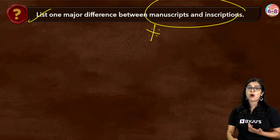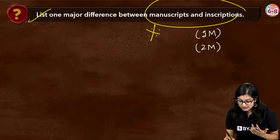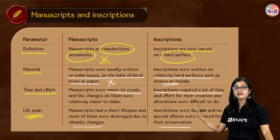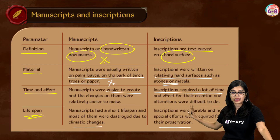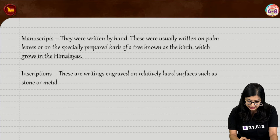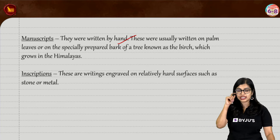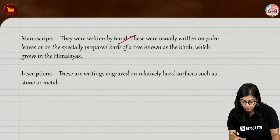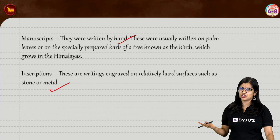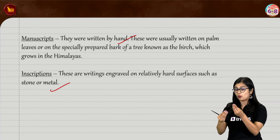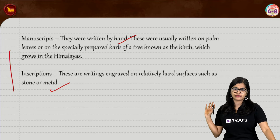The question only asks for one major difference, but this can come for one, two, three, or even four marks. I've given you enough for all scenarios. When writing the answer, mention that manuscripts are handwritten documents written on palm leaves or bark of birch trees, while inscriptions are engraved on hard surfaces. If they ask for one major difference, writing about their definitions and materials will easily earn you one mark. Easy peasy.